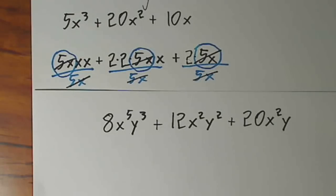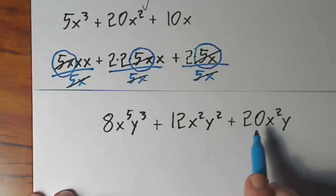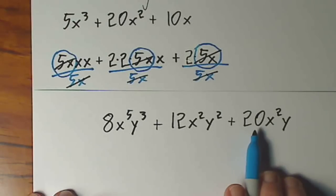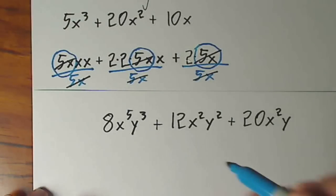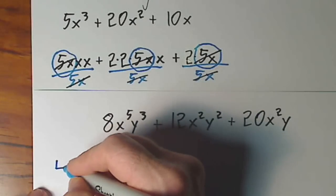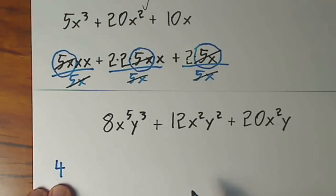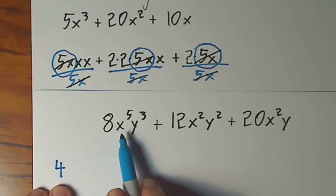For the coefficients, for the numbers in front of the variables, 8, 12, and 20, the most I can get out of each term is going to be a 4. So if I'm going to divide out a 4, I have to indicate that I'm willing to multiply by 4.